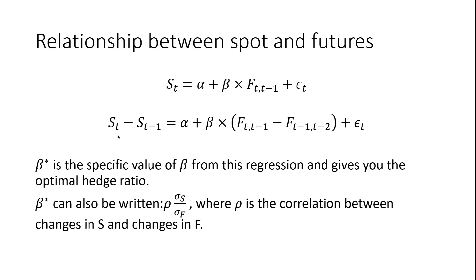If you have data, you can run this regression and get the optimal hedge ratio. Beta-star can also be estimated as the correlation between the difference in spot price and the difference in futures price, times the ratio of the volatility of the spot price to the volatility of the futures price.